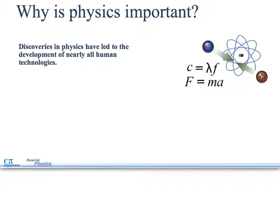Why is physics important? Discoveries in physics have led to the development of nearly all human technologies. Here you see a couple of formulas we'll be using this year. It's important to study physics because it helps you understand the world around you, whether it be how things move, how you see and see color, how you hear sound, how you talk, how we have gravity and how the gravitational fields work. Physics happens all around you. That's why it's important to study.